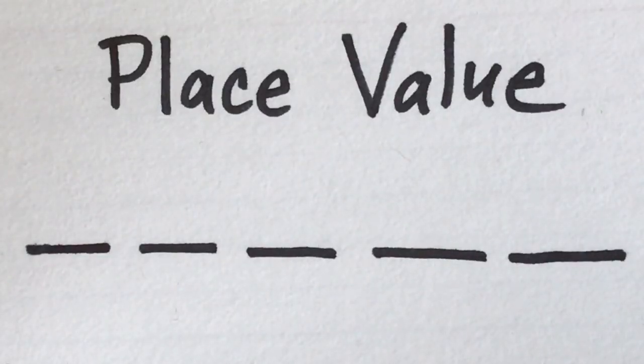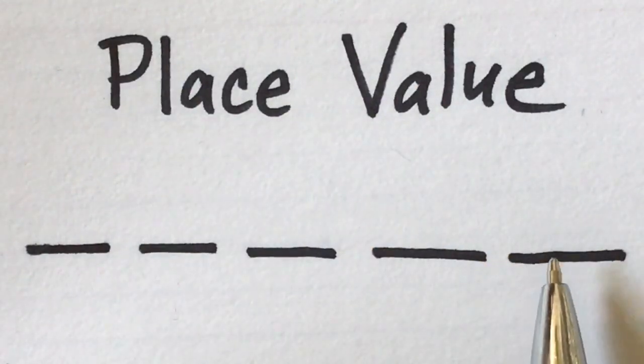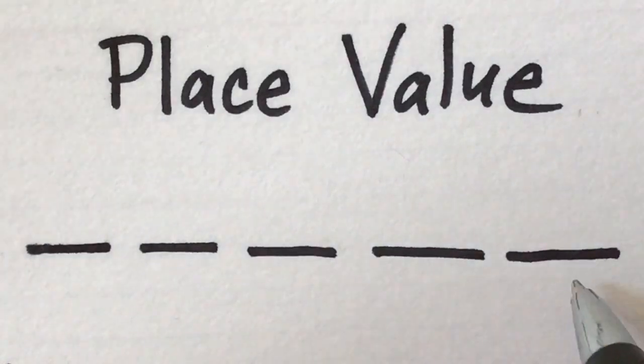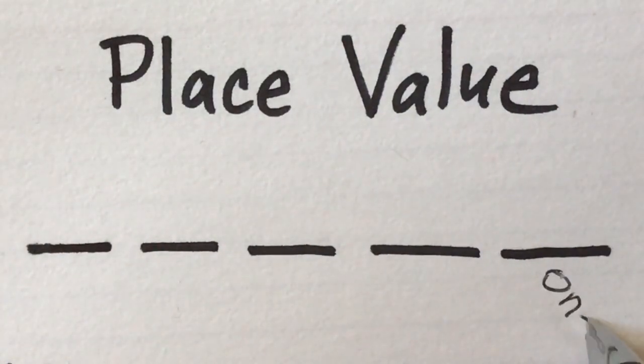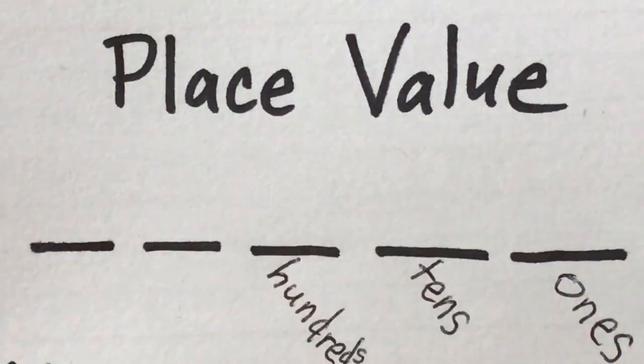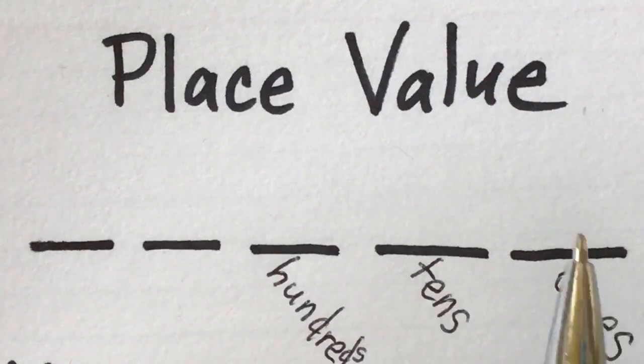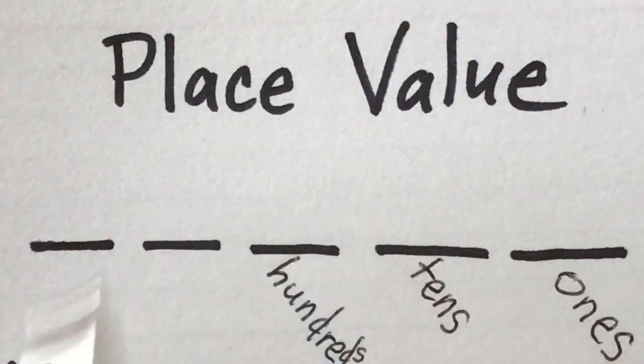So when we are talking about place value, we are talking about how much value each place of the digit is worth. Let's go ahead and fill in our place value chart. Don't forget when you're heading to the thousands you have to add a comma after three digits.